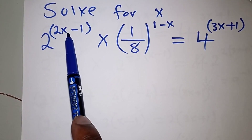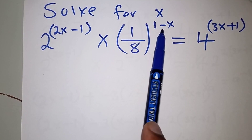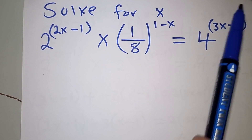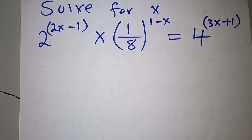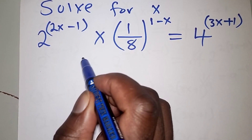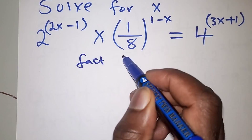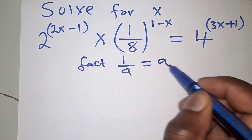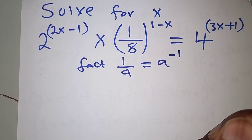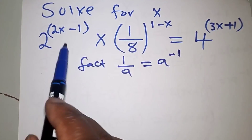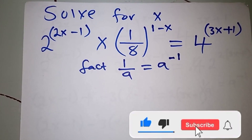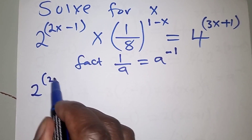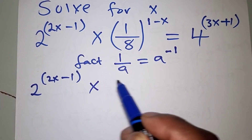The first question: solve for x. We have 2 raised to 2x minus 1, as we can see. The approach is to put them under the same base. There is a fact we need to know: 1 over a is the same as a to the power negative 1. So we can represent 1 over 8 in that form, since 1 over a equals a to the power negative 1.